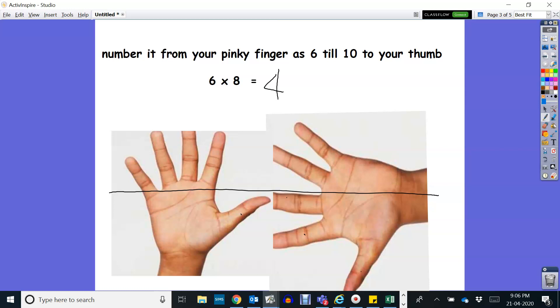And then on the top we have 4 and 2. So we have to multiply them. 4 times 2 is 8. So the answer is 48. Very easy.